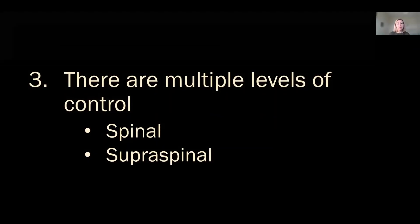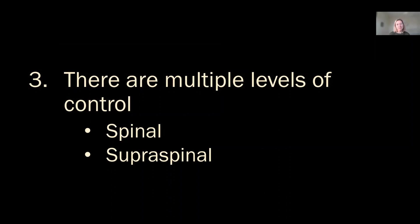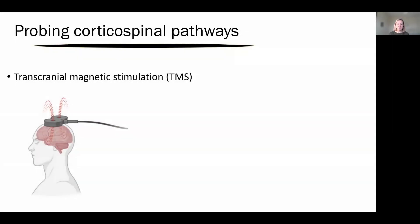Now let's think about supraspinal control — how could we really start to look at whether the brain is contributing to different muscle activities during movements? There's one technique I use called transcranial magnetic stimulation, and the principles are very similar to what we just talked about for peripheral nerves. If we stimulate that pathway, send information along it, and look at how the muscles respond, we can start to understand how the information in that pathway is being used by the nervous system.